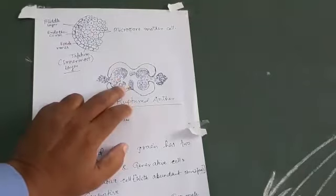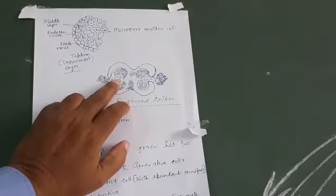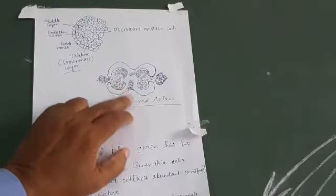Here in this diagram you can see how the pollen grains are released after the rupture of the anther upon maturity.